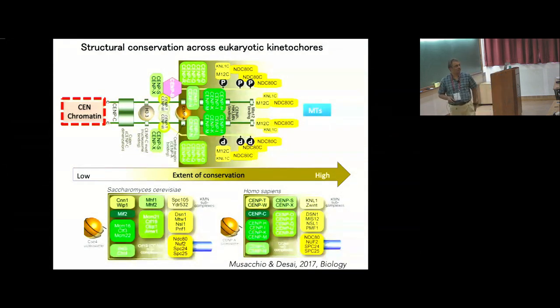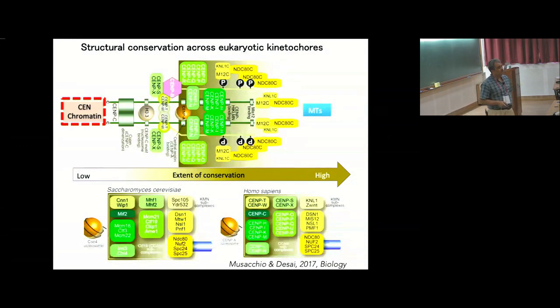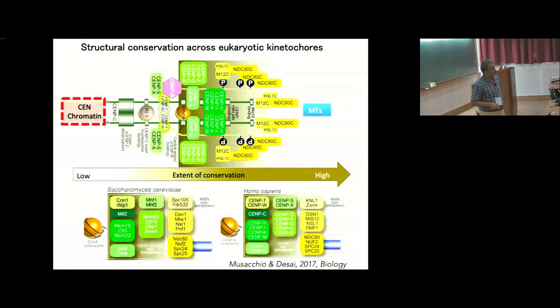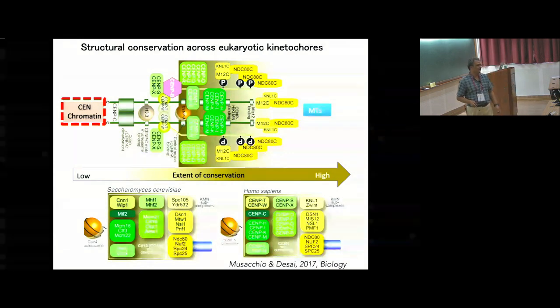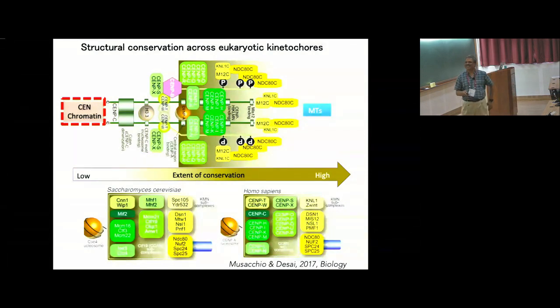Audience question: Is 125 base pairs just one nucleosome? Yes, that's right. That's amazing. And one argument is that these chromosomes are much smaller than human chromosomes and probably need more mechanical forces to separate, but that may not be the only reason.